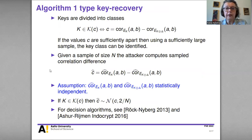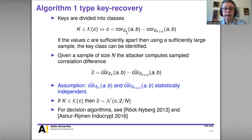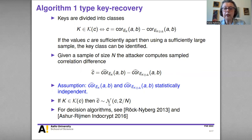Let's look more closely at the Algorithm 1 type key recovery. The keys are divided into key classes, denoted by the value C that the difference of correlations takes. If the values C are sufficiently apart, then using a sufficiently large sample, the key class can be identified. Given a sample of size N, the attacker computes a sampled correlation difference. Under the assumption that the two correlations are statistically independent, within key class Kc, the sample correlation is normally distributed with mean C and variance 2 over N.